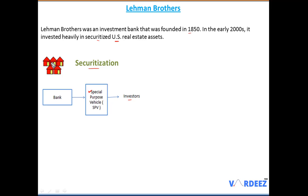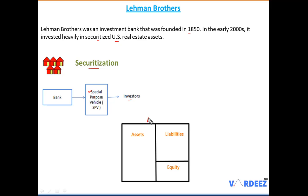Usually in securitization, the bank will not keep these loans on their balance sheet — they transfer them to the SPV. But in Lehman's case, they had these securitized assets heavily on their own balance sheet as well. Apart from that, they also invested heavily in the US commercial real estate market. Here we have a simple hypothetical balance sheet where assets equal liabilities plus equity — the fundamental accounting equation.